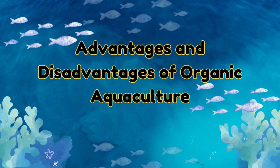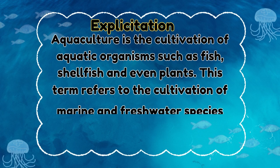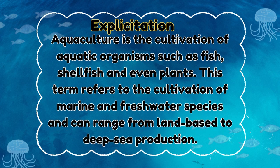For today's lesson, we will discuss the advantages and disadvantages of organic aquaculture. Aquaculture is the cultivation of aquatic organisms such as fish, shellfish, and even plants. This term refers to the cultivation of marine and freshwater species and can range from land-based to deep-sea production.